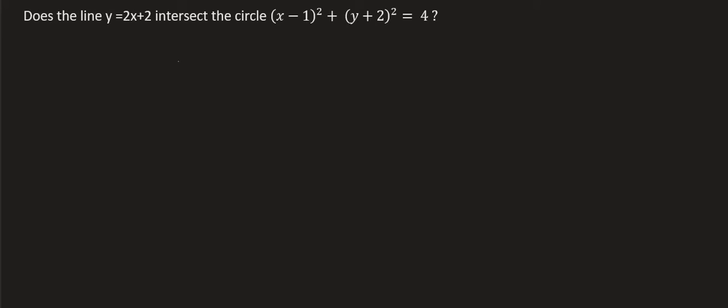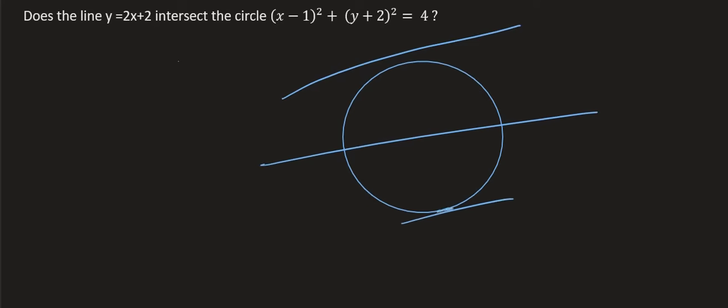This question asks whether the line y equals 2x plus 2 intersects the circle or not. If we had a circle and there was some line, well that line could clearly miss the circle, it could intersect the circle, or it could be a tangent where it cuts at exactly one point. But how would we know what this line does to that circle?